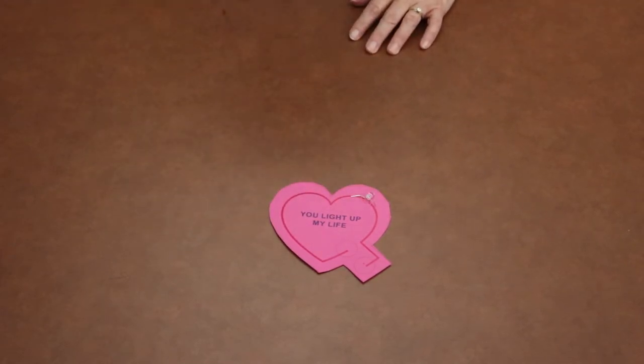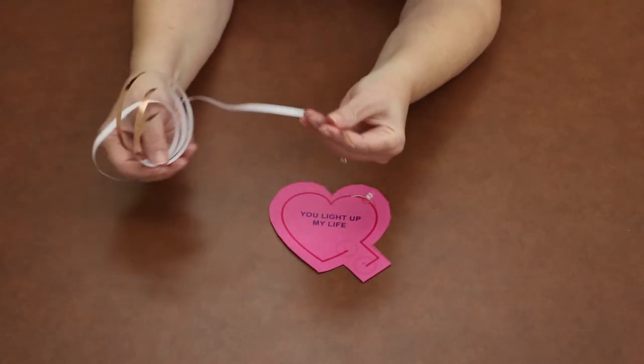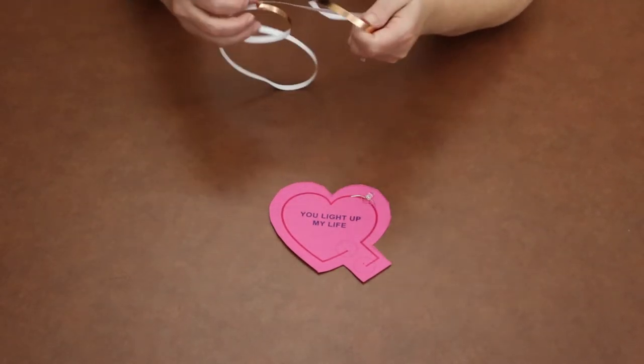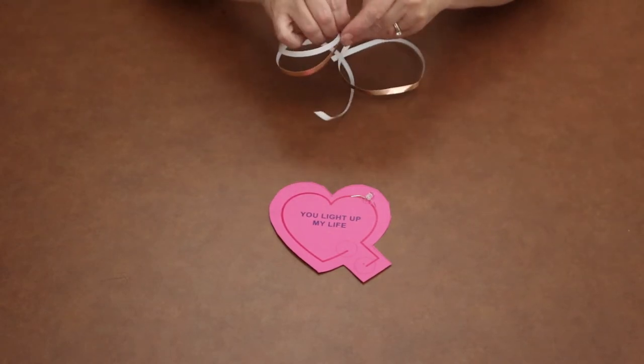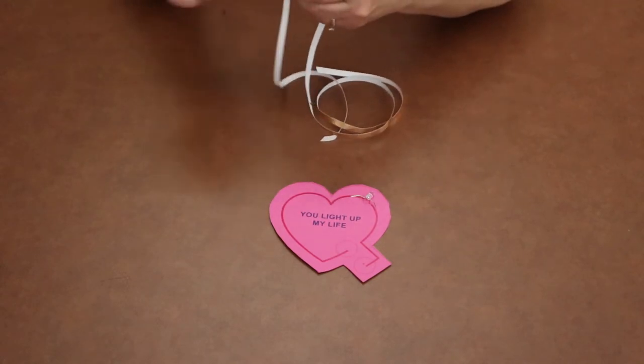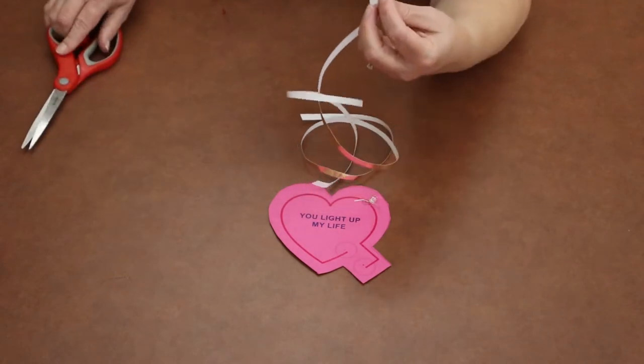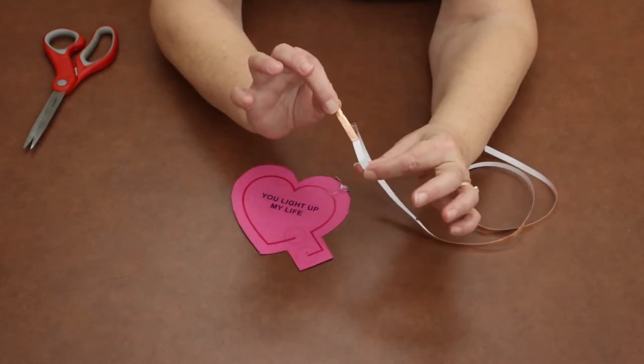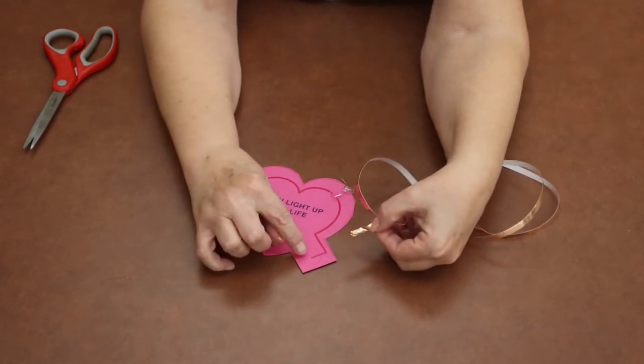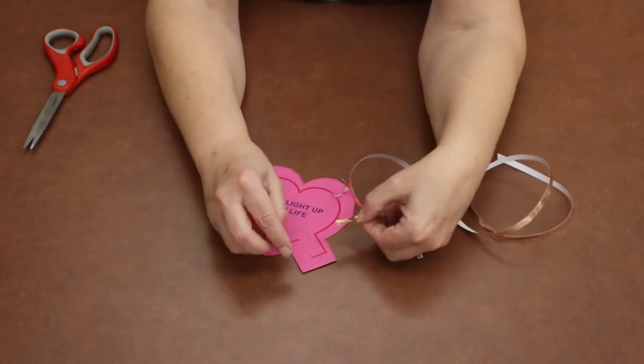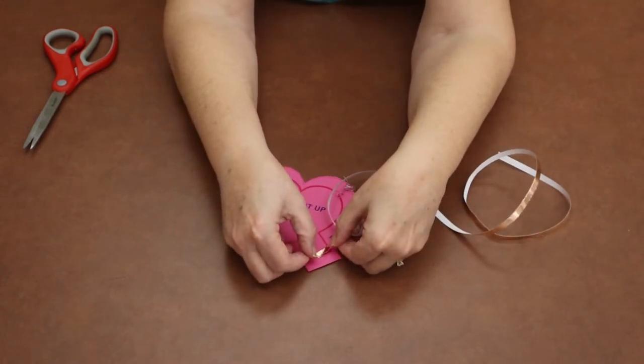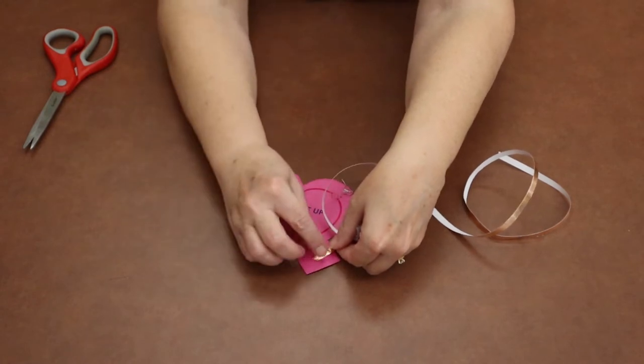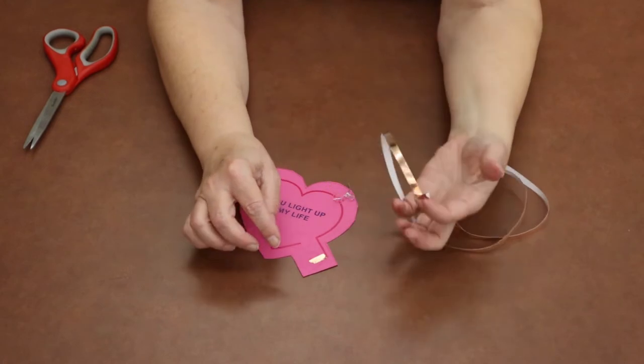So then the next thing you want to do is take your copper tape and find an end that will peel away. You'll take and pull the white backing of the copper tape away from the tape and you're going to start in the shorter part of the template and you're just going to press your copper tape down right in the center covering this thick line of the template. And to make your corner, if you tear it, that's okay.